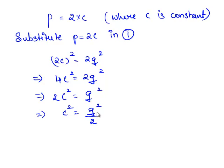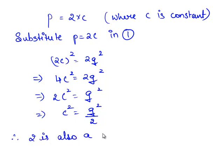This expression can be written as c squared is equal to q squared by 2. From this expression we see that 2 divides q squared, which also implies that 2 divides q. Therefore, 2 is also a factor of q.